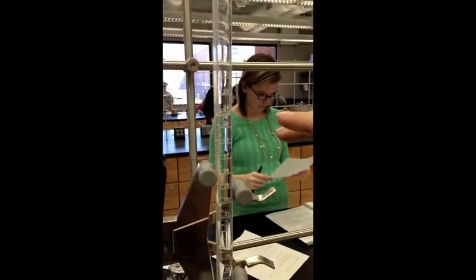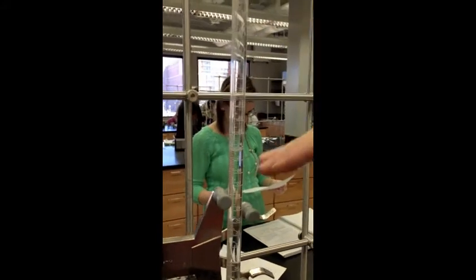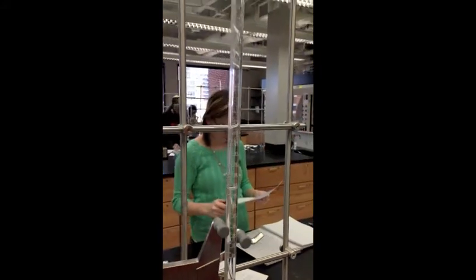After filling up your burette, you look at the meniscus right here. I'd say it's around 24.4. You would take that number, subtract it from your initial volume, and that's going to give you your delta volume for your solution.